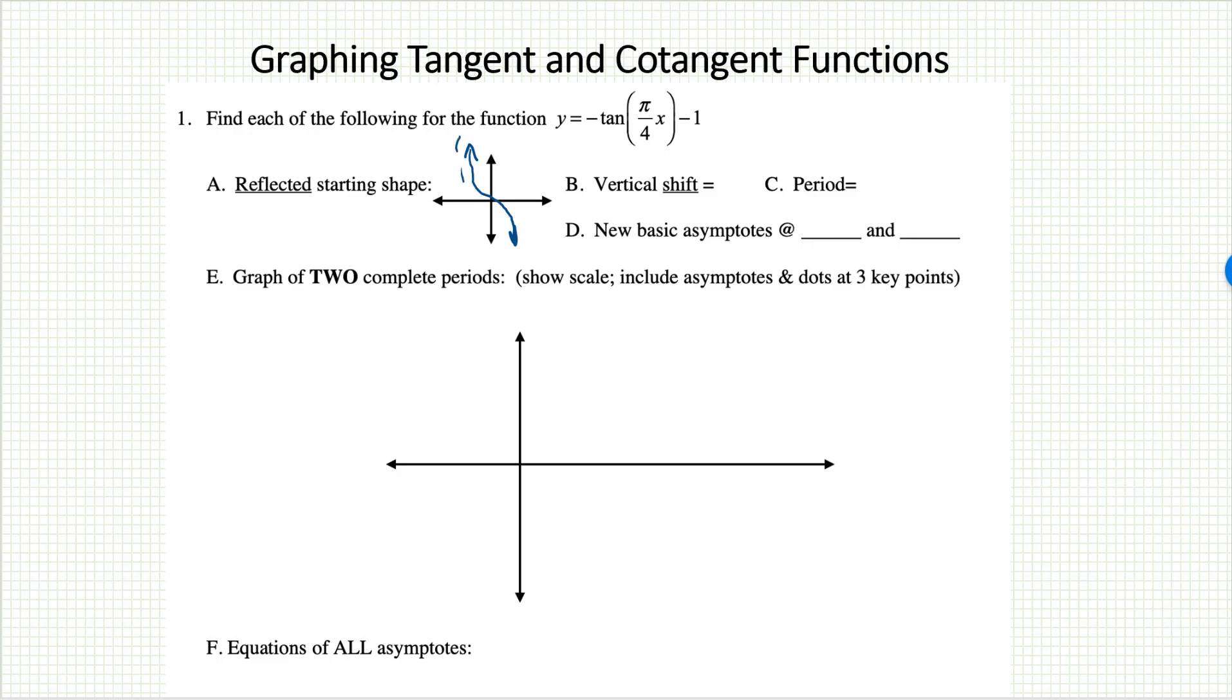The interesting thing about that is that it kind of looks like a cotangent shape now. That's true, but the asymptotes don't match the cotangent function. The asymptotes are between negative pi over 2 and pi over 2, just like for the regular tangent function. So ultimately, that's the picture we're about to draw.